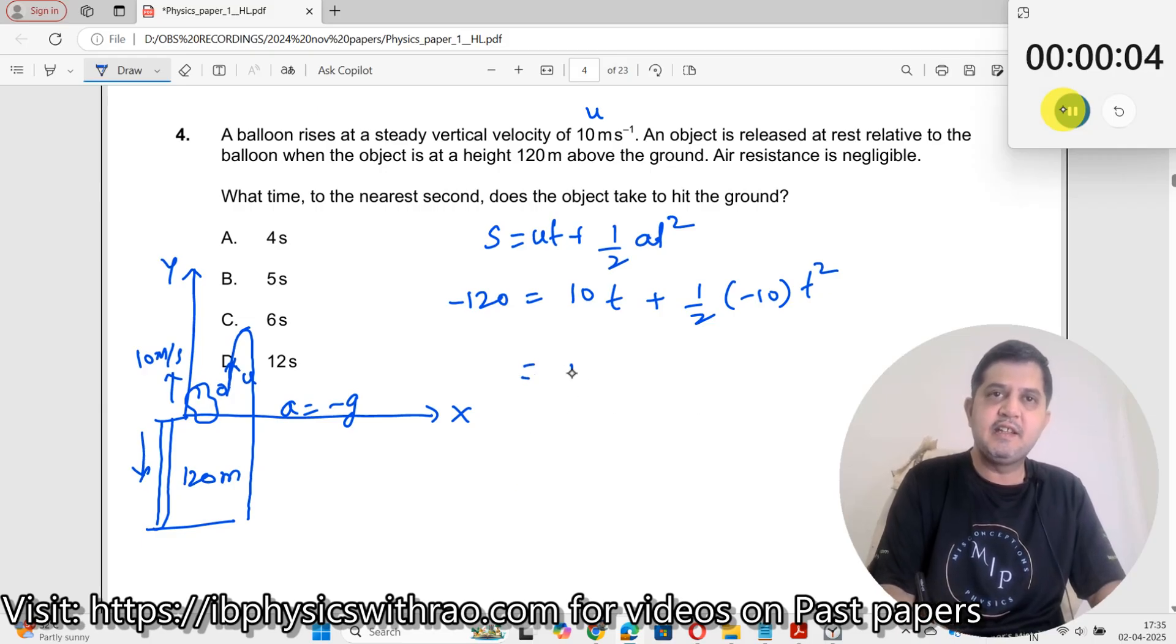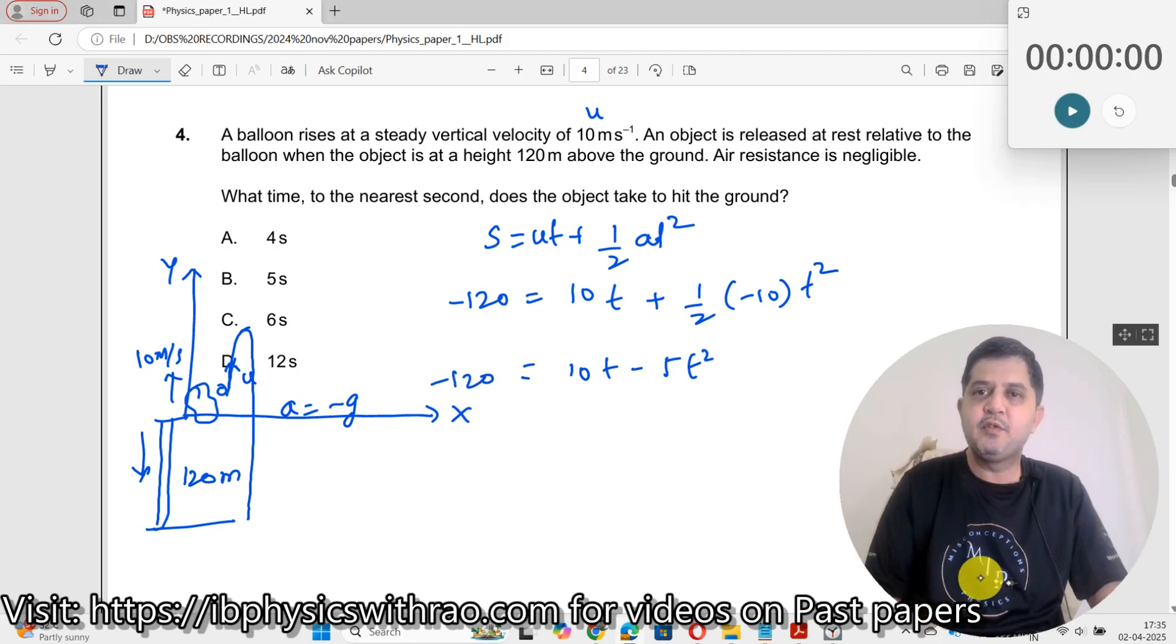So what do I get over here? I get this as 10t minus 5t squared equals minus 120. So as a result of this, let me simplify this.